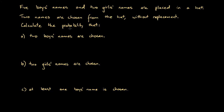Calculate the probability that: A, two boys' names are chosen; B, two girls' names are chosen; C, at least one boy's name is chosen.